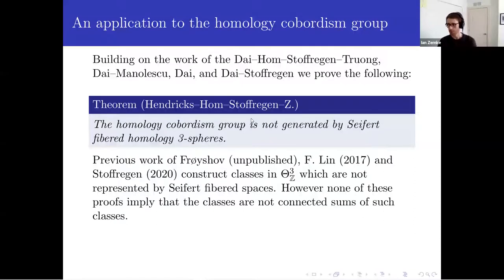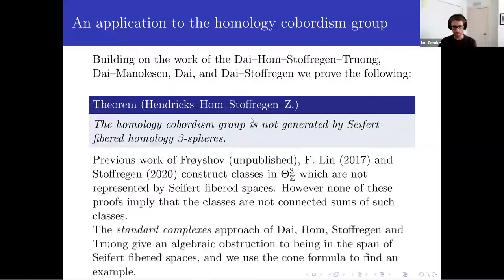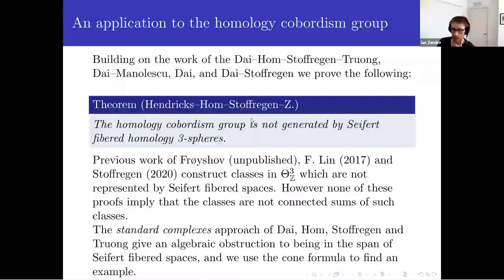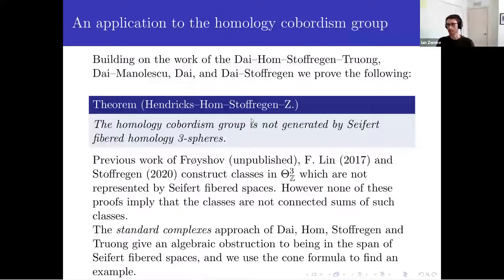The three-manifold is plus-one surgery on a knot in S^3 — that's the relevance of the mapping cone formula. The obstruction uses the standard complex approach of Dai-Hom-Stoffregen-Truong, which gives an algebraic obstruction to being in the span of Seifert fibered spaces. The work of Dai-Manolescu and Dai-Stoffregen showed that anything that's a linear combination of Seifert fibered spaces has particularly simple involutive Heegaard Floer homology. We just exhibited a knot where plus-one surgery doesn't have this simple form and so is not in the span.